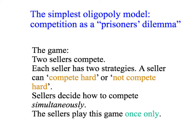The Prisoner's Dilemma game is very simple. There are simply two different businesses, and they're going to be competing with each other. Each business has only two strategies: an individual seller can choose whether to compete hard or not compete hard. Both businesses make their decision simultaneously, not knowing for sure what the other business is going to do. Further, this game is only played once — there's no repetition. Each business gets one shot at deciding whether to compete hard or not.